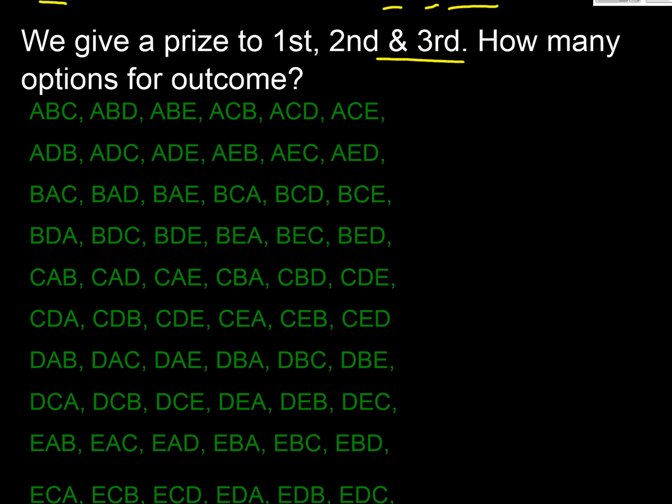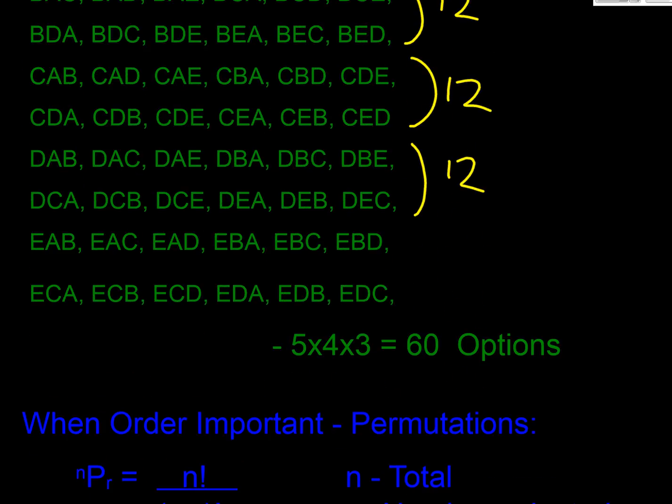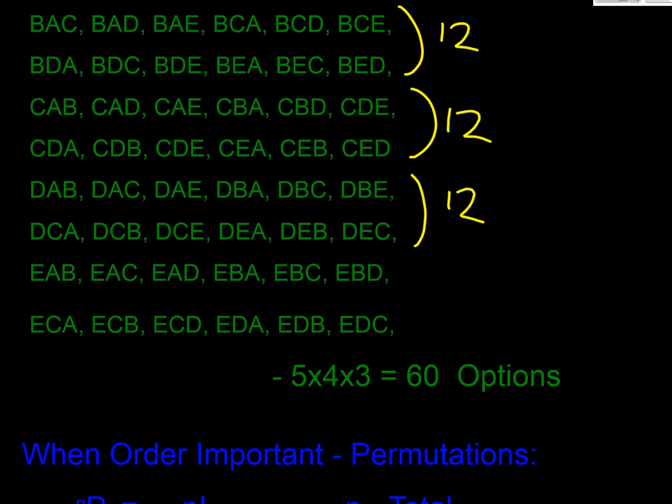Third, we give a prize to first, second and third. How many options are there? Well, A could win, B could come second and C could come third. Or A could win, B could come second and D could come third. And if we build up this systematic list, you can see here there's 12 ways that A wins. There's 12 ways that B wins, 12 ways that C wins, 12 ways that D wins, etc. So if we just had a quick think about what we've just seen there, well we could have five winners. Any one of the five could win. But once one of those five is won, there's only four left to come second and there's only three left to come third. So we end up with 60 options.